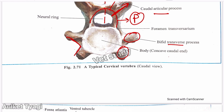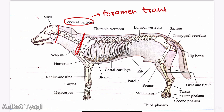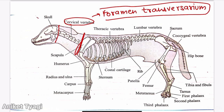Now we will talk about the general cervical vertebrae. These cervical vertebrae form the skeleton of the neck and are characterized by the presence of short processes of various shapes. The most peculiar characteristic feature of these vertebrae is the foramen transversarium, which is only present in cervical vertebrae.